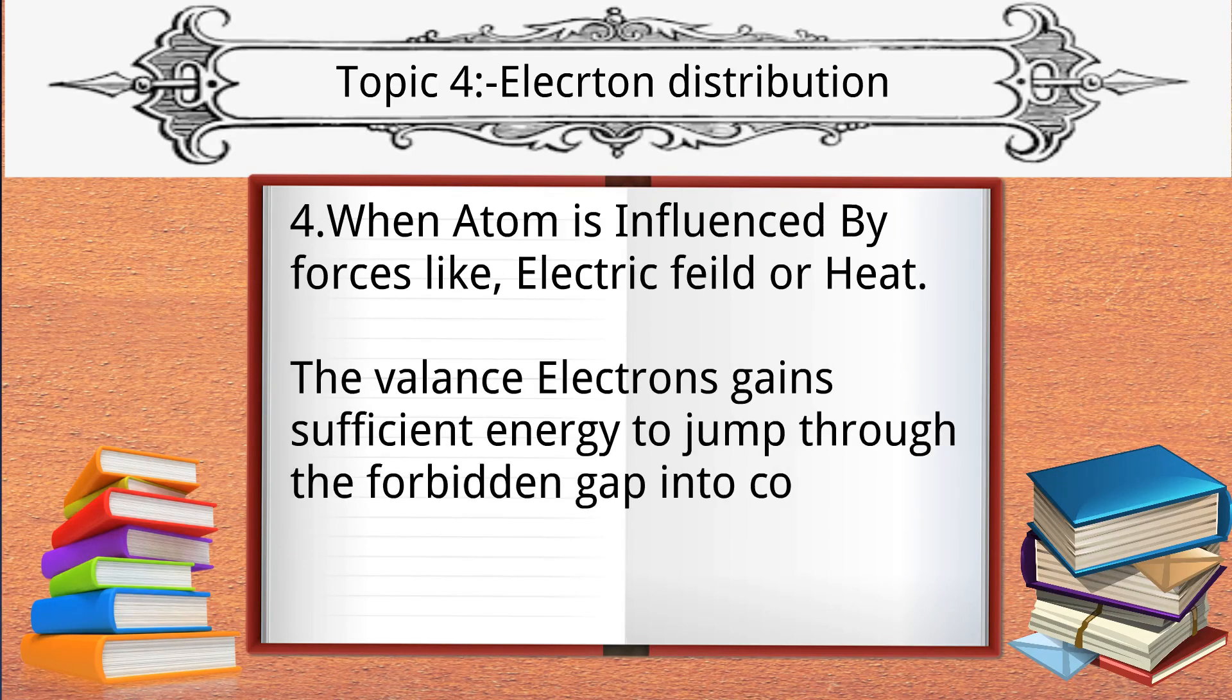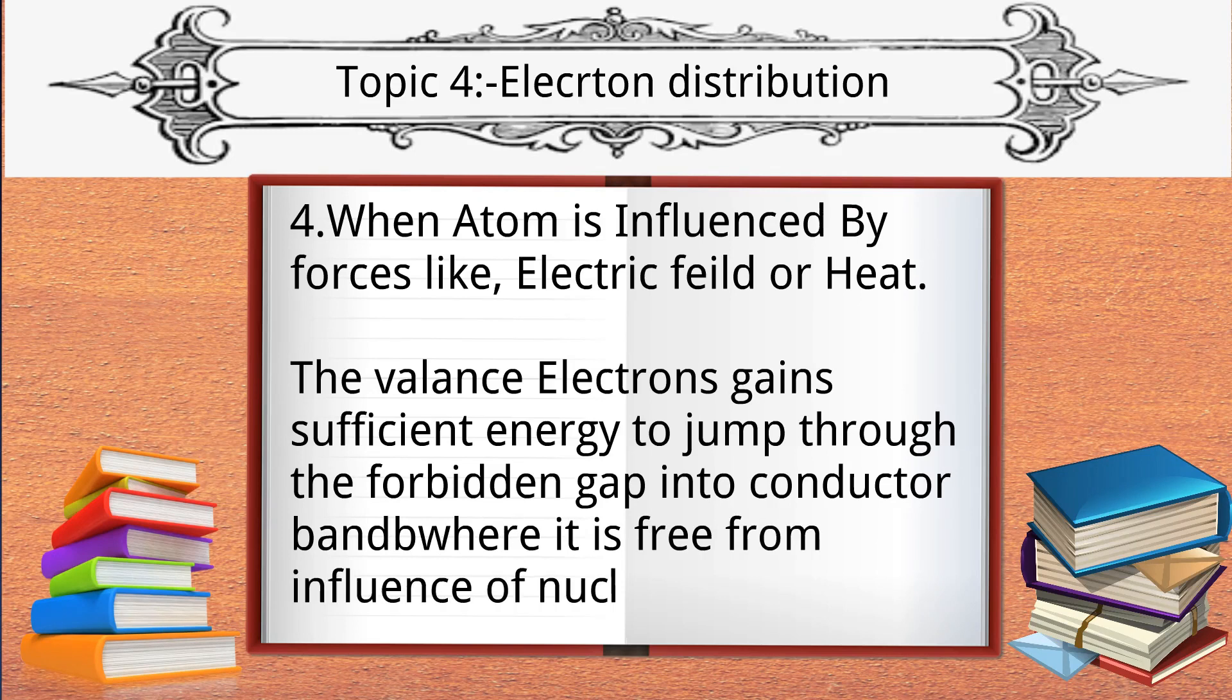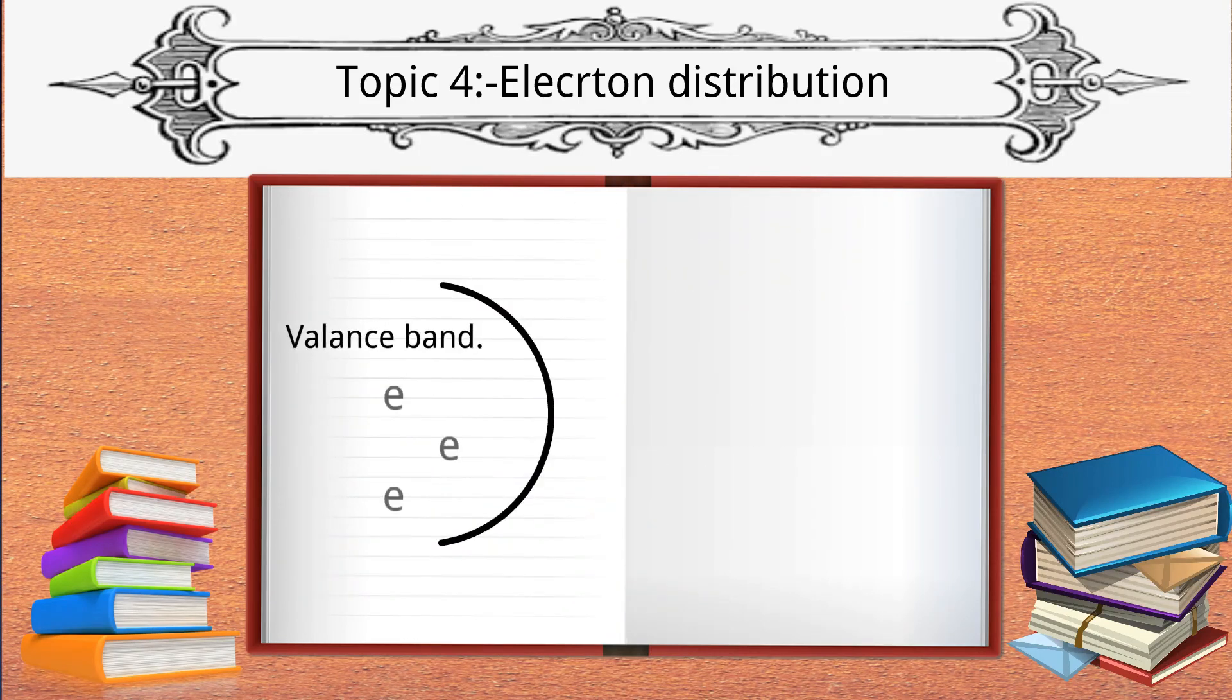When an atom is influenced by forces like electric field or heat, the valence electrons gain sufficient energy to jump through the forbidden gap into the conduction band, where it is free from influence of the nucleus. For all those who don't know valence band, forbidden gap, and conduction band, let me tell you that electrons are present in valence band.